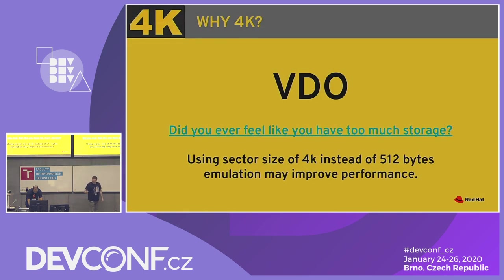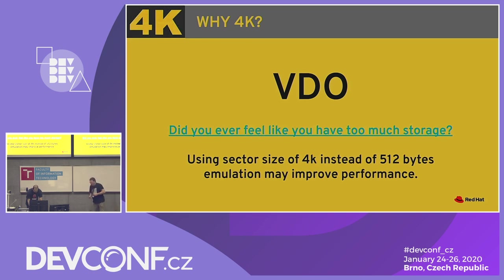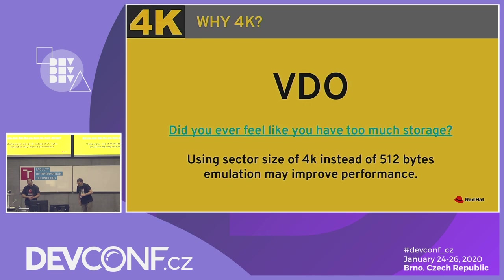What is VDO and why is it related to 4K? VDO is a deduplication and compression solution for Linux. It can give you 10 times the storage space with the same hardware. The Gluster solution wants to use VDO, and VDO is designed to use 4K blocks — everything is designed for 4K. It can emulate storage with a 512-byte sector size, but that makes it slower. So the Gluster team wants to use VDO in the way it was designed.